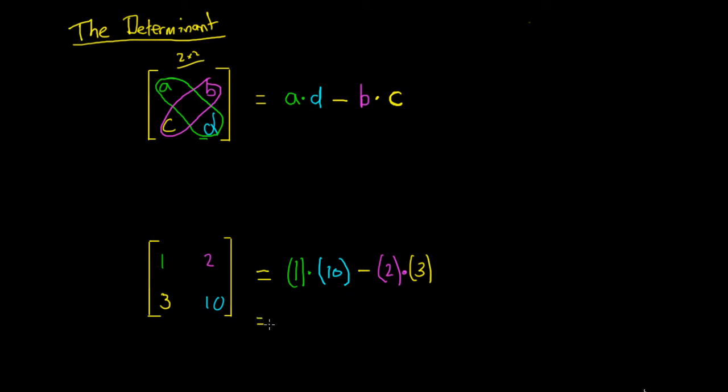So to work out the determinant of the matrix it's going to be a d minus b c. 1 times 10 minus 2 times 3. So we know that 1 times 10 is going to be equal to 10. And then we're going to minus 2 times 3 which is equal to 6. So we're going to have 10 minus 6. The determinant of this matrix is going to be 4.